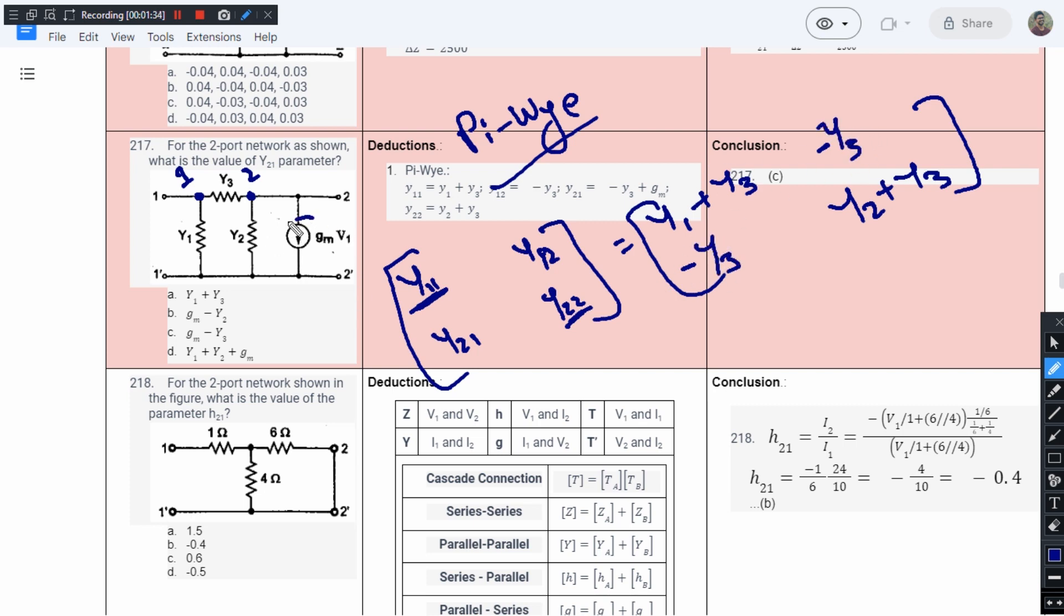But if you observe, we have also been given a current source, a dependent current source. This symbol is a bit confusing, but this is a current source. This is a voltage dependent current source, and this is its admittance. This is the dependence parameter.